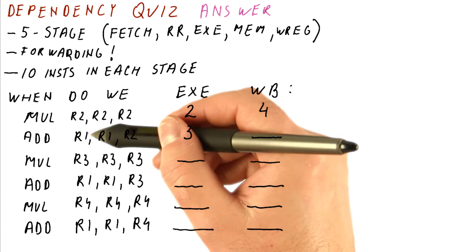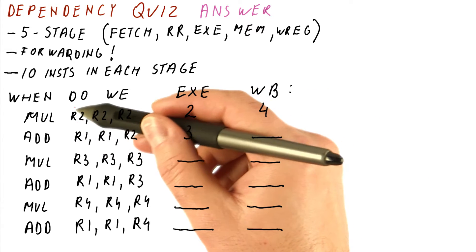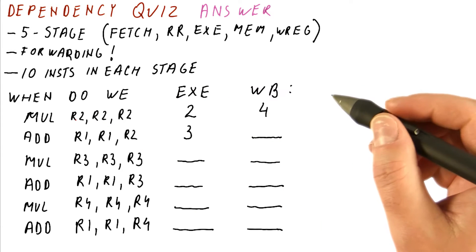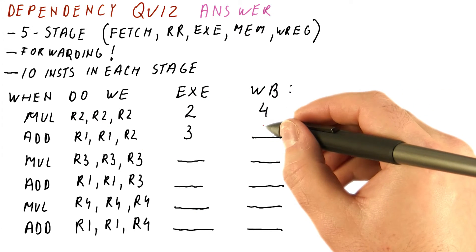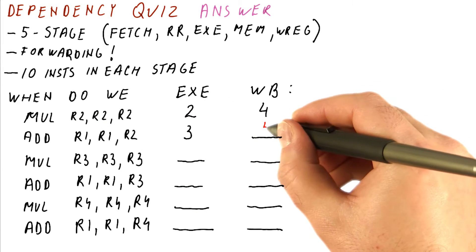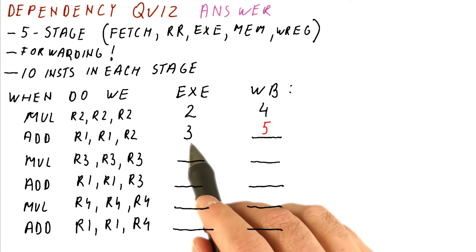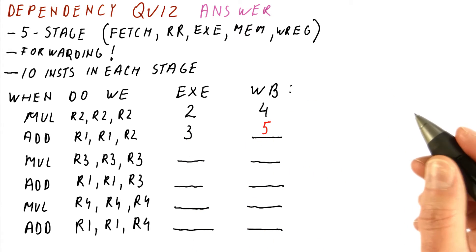So the add is here producing a value of R1. That is not a problem because the previous instruction is just producing R2. So the add can write its result when it's time, and when it executed in cycle three, it's going to write in cycle five.